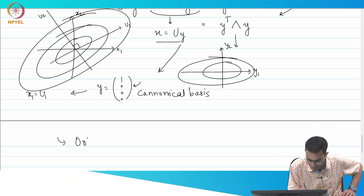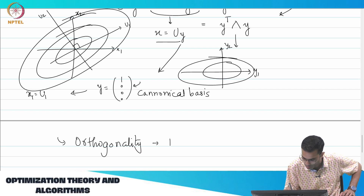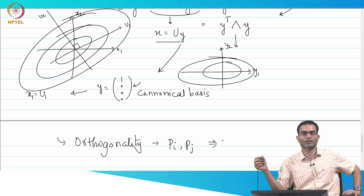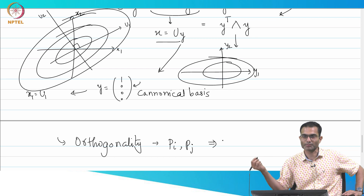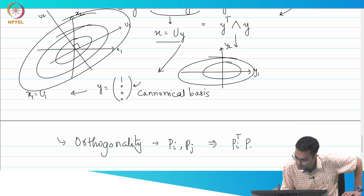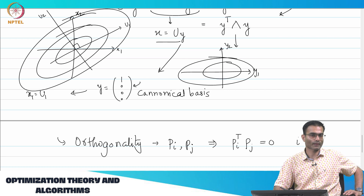When we say orthogonality of Pi and Pj, what did it imply? If Pi and Pj were orthogonal, it simply means that Pi transpose Pj is equal to 0, for i not equal to j.